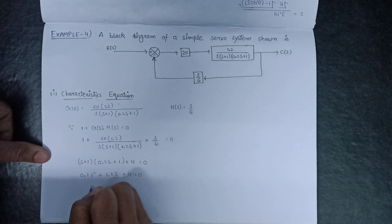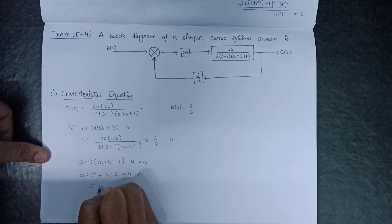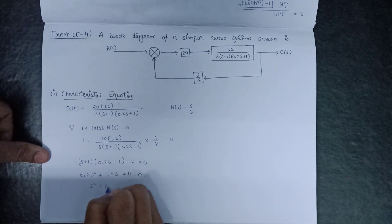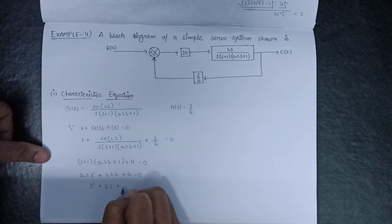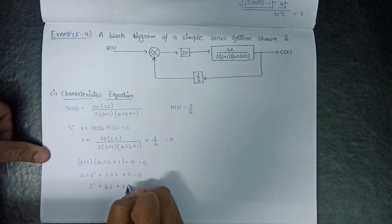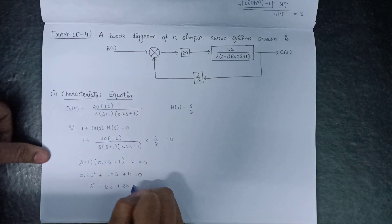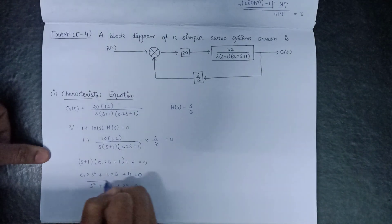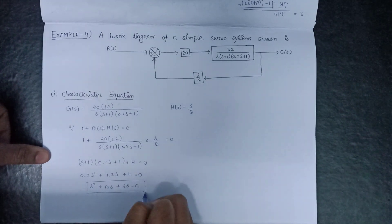Taking 0.2 common, the characteristic equation becomes: s² + 6s + 25 = 0. This is our characteristic equation.